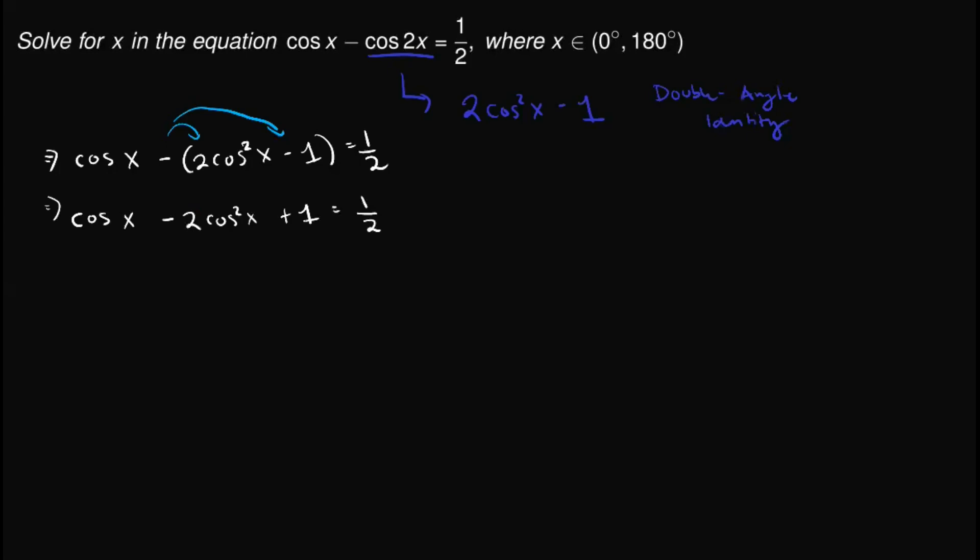Now, moving this one half and subtracting it from 1, we will have cosine x minus 2 cosine squared x plus 1 minus one half. Or 1 minus one half is simply one half. And this one is equal to zero.